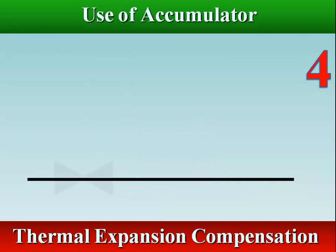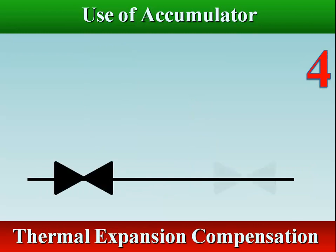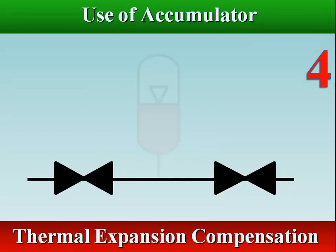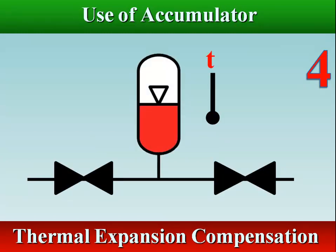Changes in the volume of a liquid resulting from changes in the temperature within a closed circuit can increase or decrease the internal pressure. An accumulator can be used to mitigate any such fluctuations in the pressure.